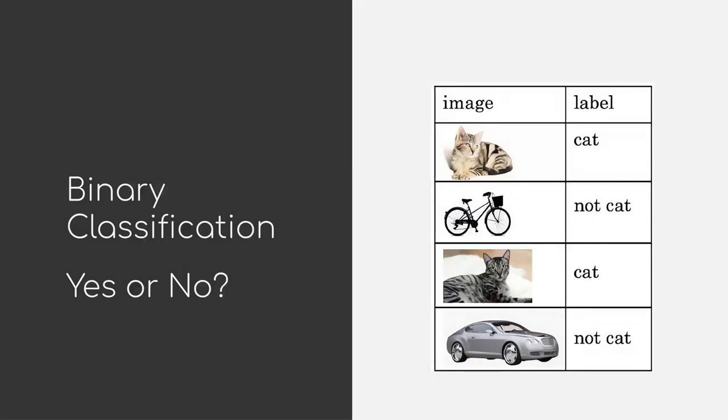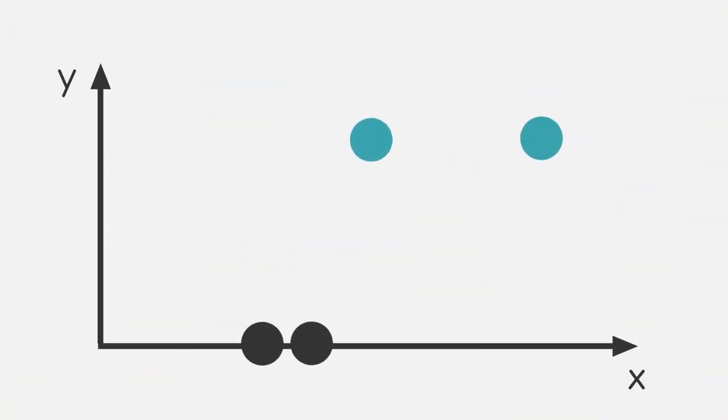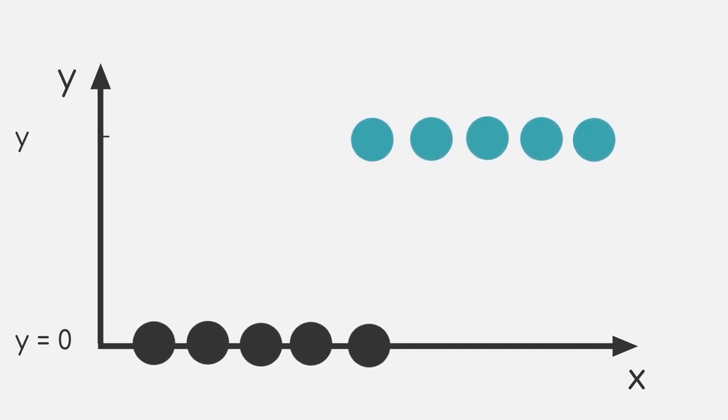As said, our task is now a simple yes or no question. So let's consider an example dataset where we have a bunch of data points having 0 as label, which means no, and some with 1, meaning yes.